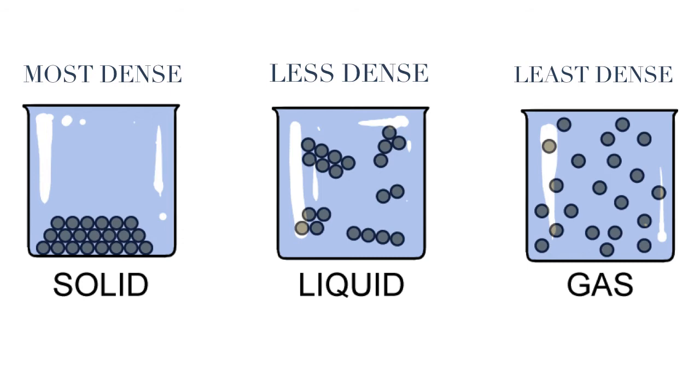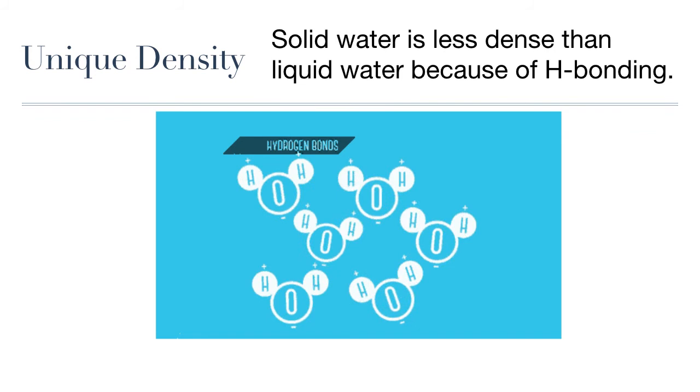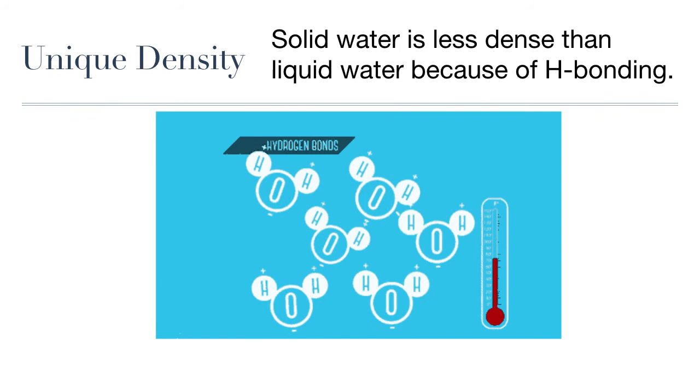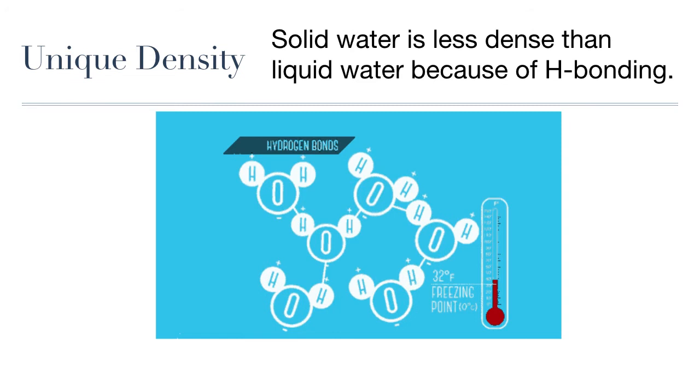So why does ice float? It's all about hydrogen bonding. Ice is less dense than water because when the liquid cools down and molecules lose energy, more hydrogen bonds form between the molecules, forcing the molecules into a more spread out lattice to accommodate for the maximum amount of hydrogen bonds.